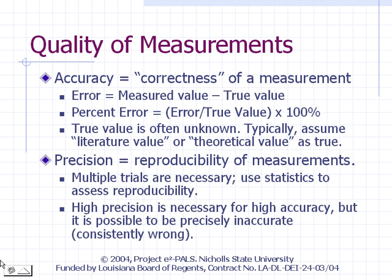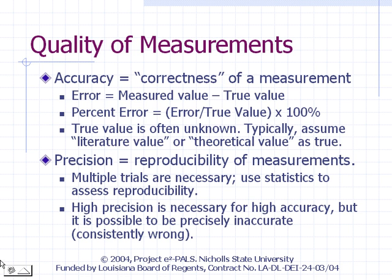Accuracy and precision are two ways that we describe the quality of a measurement. People often use the terms interchangeably, but they are in fact different. Accuracy refers to the correctness of a measurement, whereas precision refers to its reproducibility. The term error refers to the difference between the measured value and the true value. The typical way we assess accuracy involves calculation of percent error, which is simply the ratio of the error to the true value expressed as a percentage.